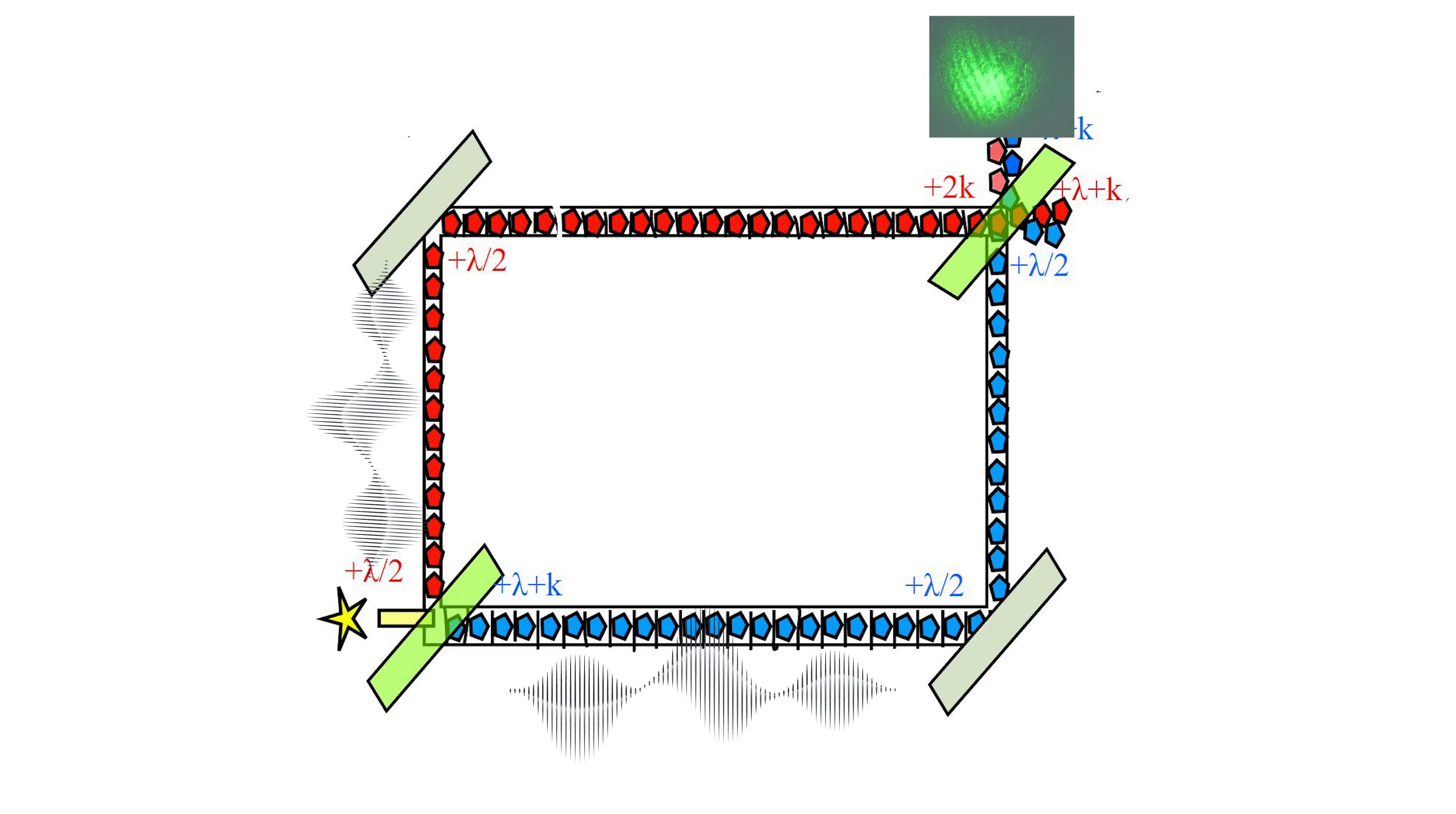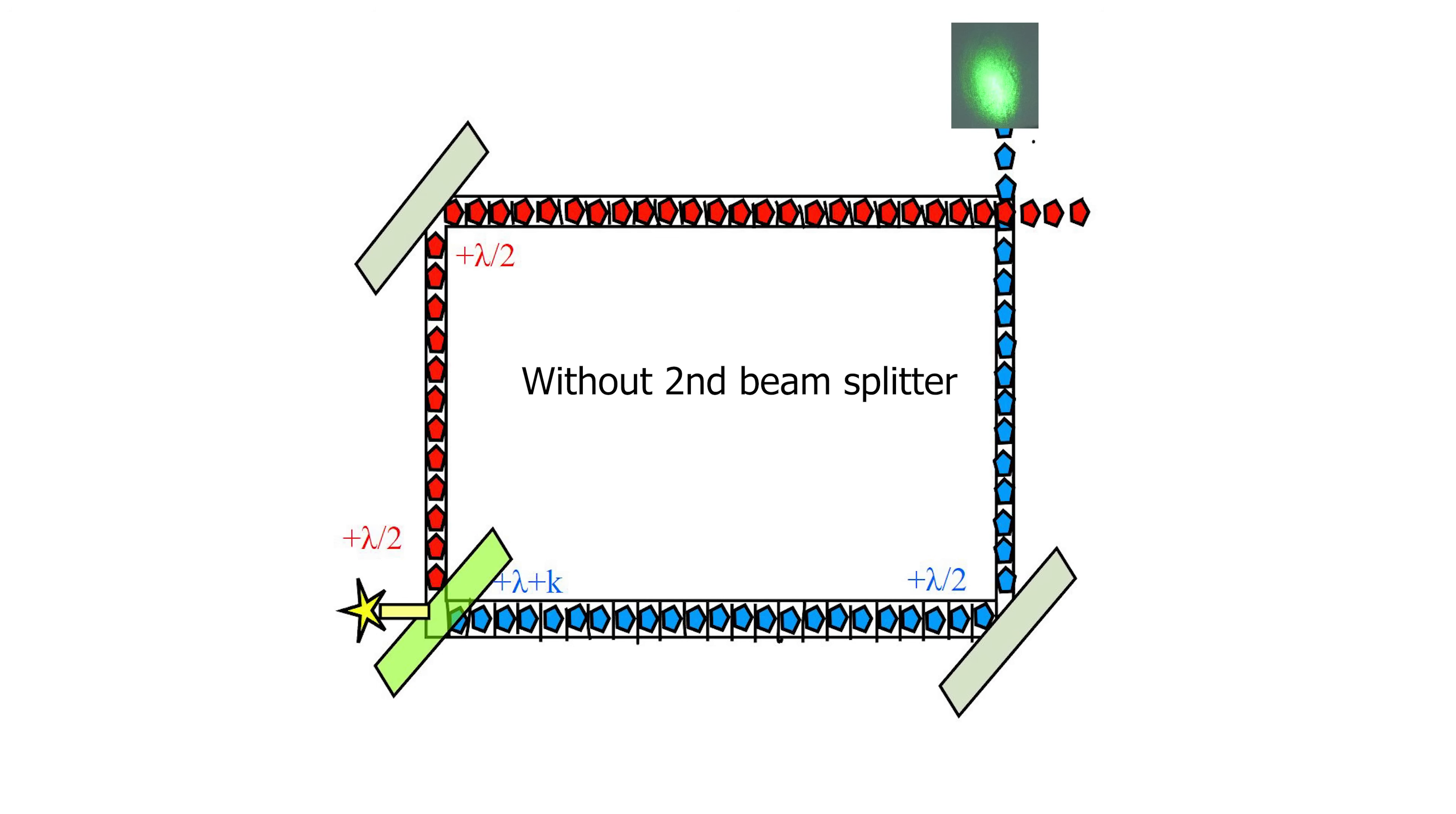But if I remove this second beam splitter, then the wave pattern disappears and I only measure individual discrete photons. And the only way these photons that hit this spot could reach this point is if they had traveled the entire distance as a whole photon, because if they went the other direction, they wouldn't end up at this point.